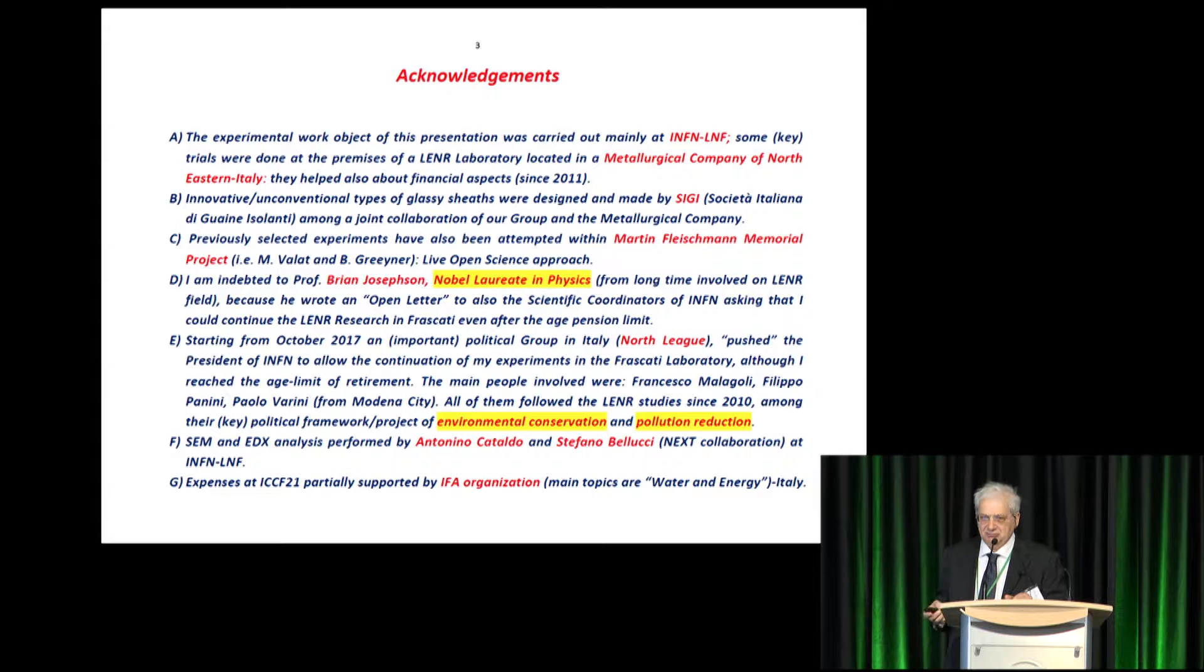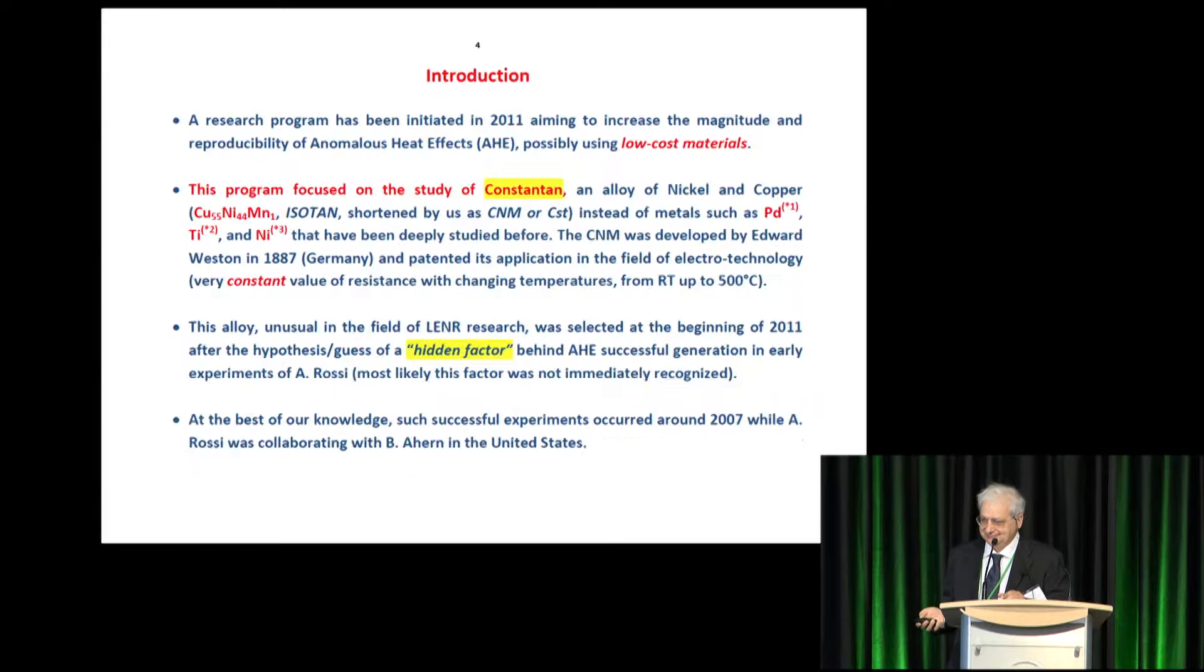So several people helped me to avoid this bad end. One was a Nobel Brian, Brian Josephson. He wrote an open letter and he made effects. Moreover, one political group in Italy, the Dutch people, they like, called the fusion. So they went to the laboratory and pushed my president that I can work in my laboratory without money, obviously. And then, at the end, I got success.